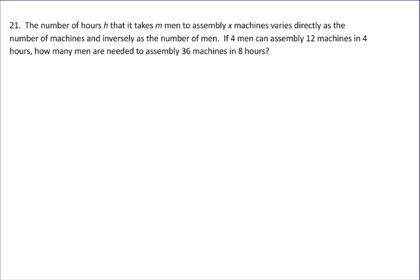Number 21. The number of hours H that it takes M men to assemble X machines varies directly as the number of machines and inversely as the number of men. So, this is a complicated setup. Let's go one piece at a time here. So H is what we're going for here. And it says that H varies directly as the number of machines. So that's going to be AX for the number of machines. And inversely as the number of men. So AX and then inverse is when you have something in the denominator. In this case, it's the men that it takes.